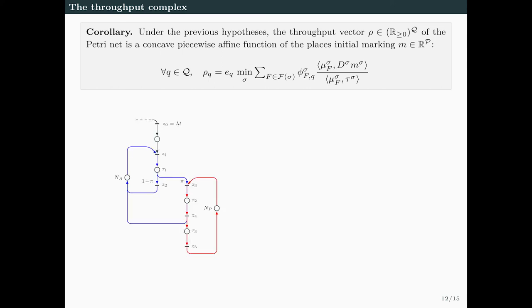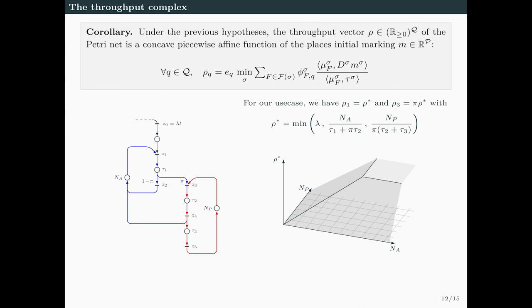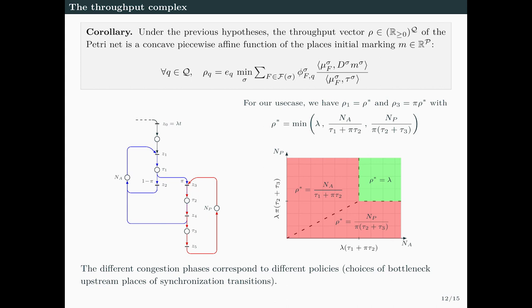Let's see how it applies to our emergency health call center example. The two key throughputs are ρ1 and ρ3, since Z1 gives calls handled by MRAs and Z3 gives calls handled by emergency physicians. We find that ρ1 equals some ρ* and ρ3 equals π·ρ*, where ρ* is the minimum of three terms: the inbound calls arrival rate λ, a second term NA/(τ1 + π·τ2) that we interpret as the average calls handling speed of NA MRAs, and NP/(π·τ2 + τ3), the average calls handling speed of doctors. You can see ρ* is piecewise defined in terms of NA and NP, and if you project its surface onto the resources plane, you obtain a phase diagram telling you which resources may cause congestion.